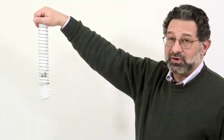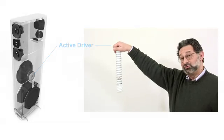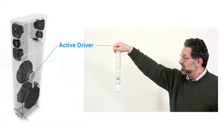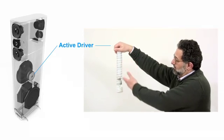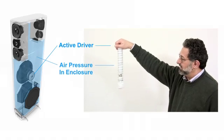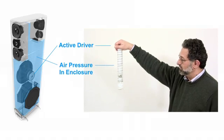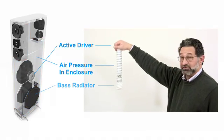Now in this model, my hand represents the active driver, that's the driver with the voice coil and the magnet, and the amplifier sends current through it and makes it move. The spring here is the air pressure inside the sealed enclosure, and the light bulb is the bass radiator.